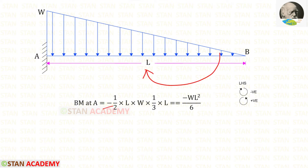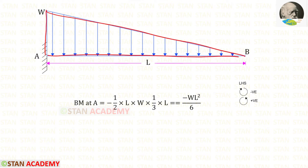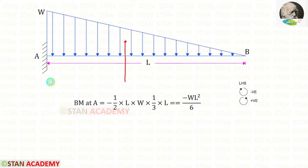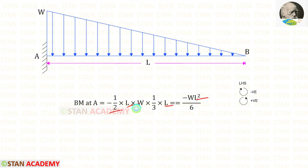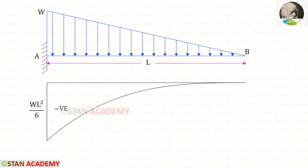We have to multiply the area with the centroid distance. We know that it is a triangle, and the area formula of a triangle is half into B times H. Here the breadth is L and the height is W, so it is half into L into W. For this triangle the centroid distance towards point A is (1/3) into L. L into L gives L squared, and 2 into 3 gives 6. So at point B the bending moment is 0, and at point A we have found the bending moment to be WL²/6.